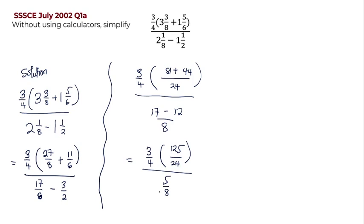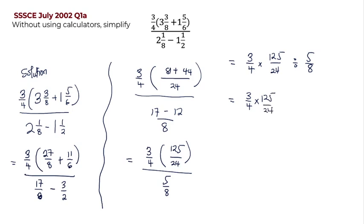So from here I can proceed and simplify what I have. So I have my 3 on 4 multiplied by 125 on 24, then I send the division sign over here — I send the fraction to the top, so it becomes divided by 5 on 8. So this is equal to 3 on 4 multiplied by 125 on 24. I need to change the division sign to multiplication, so I reciprocate this, and it becomes 8 on 5.